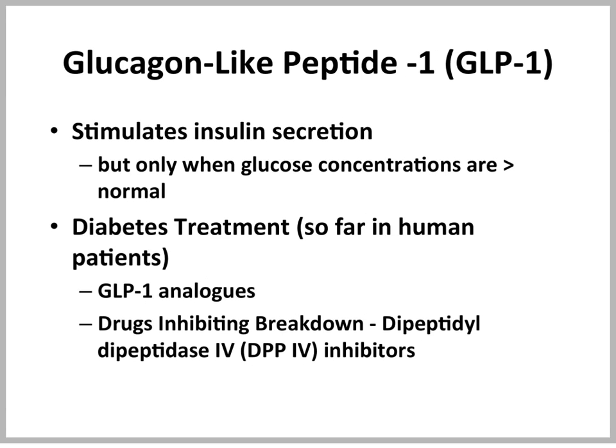Glucagon-like peptide is one of the hormones that is produced when the glucagon gene is expressed. Glucagon-like peptide 1 stimulates insulin secretion, but only when glucose concentrations are above 5 millimolar, which is the normal fasting glucose concentration. So glucose has to be normal for glucagon-like peptide to stimulate insulin secretion. This peptide is used for the treatment of diabetics, so far only in human patients, not in animal patients.